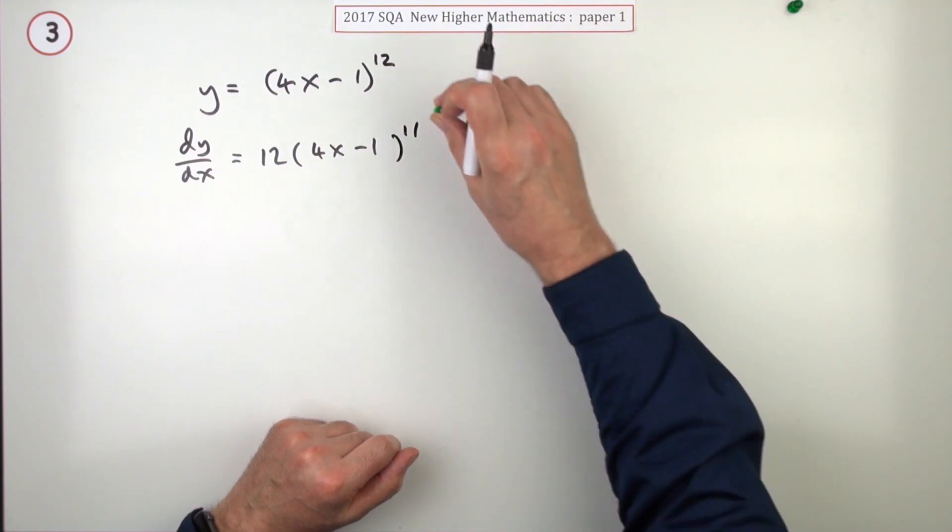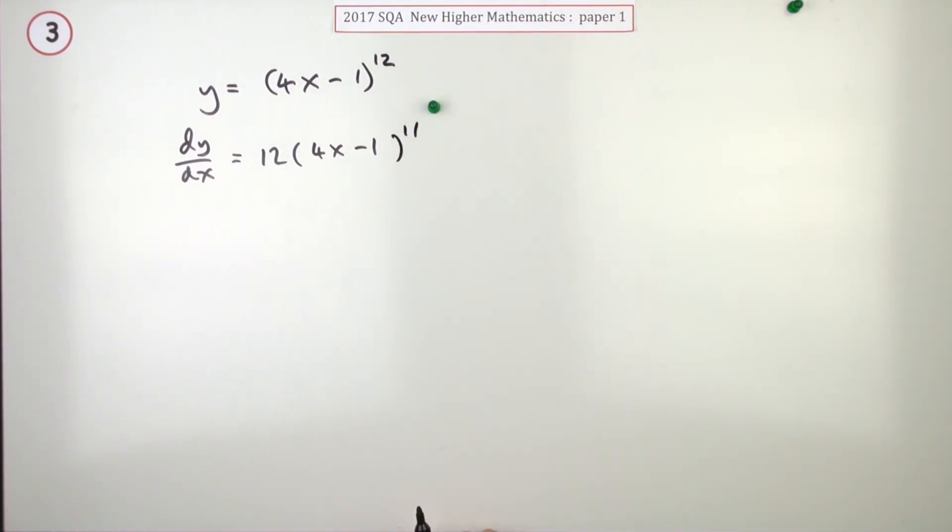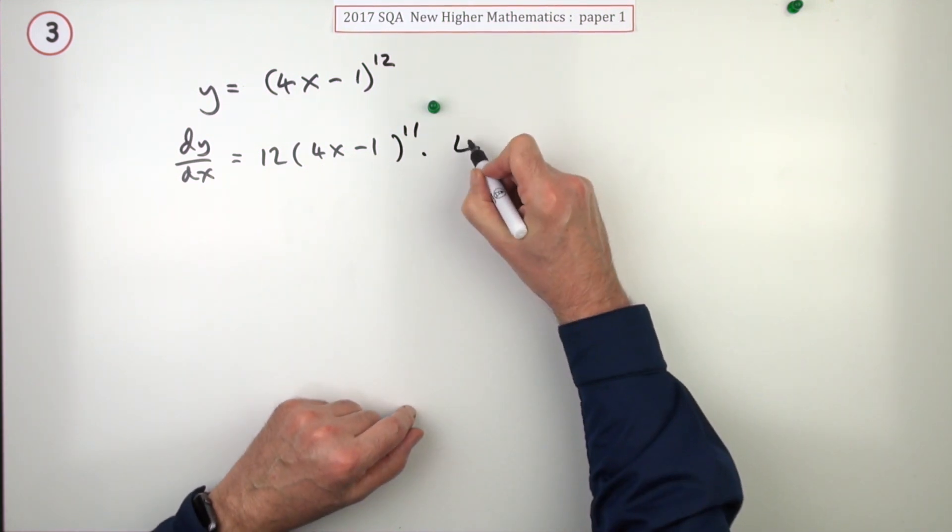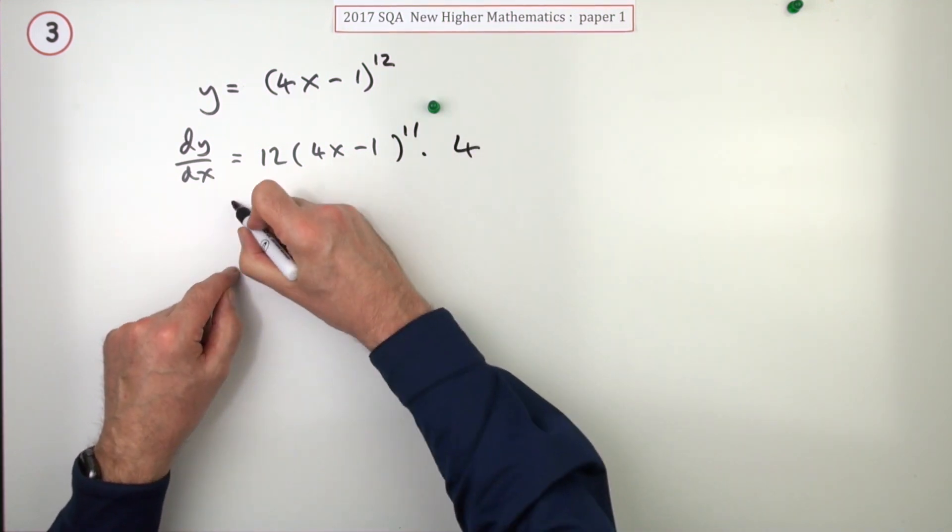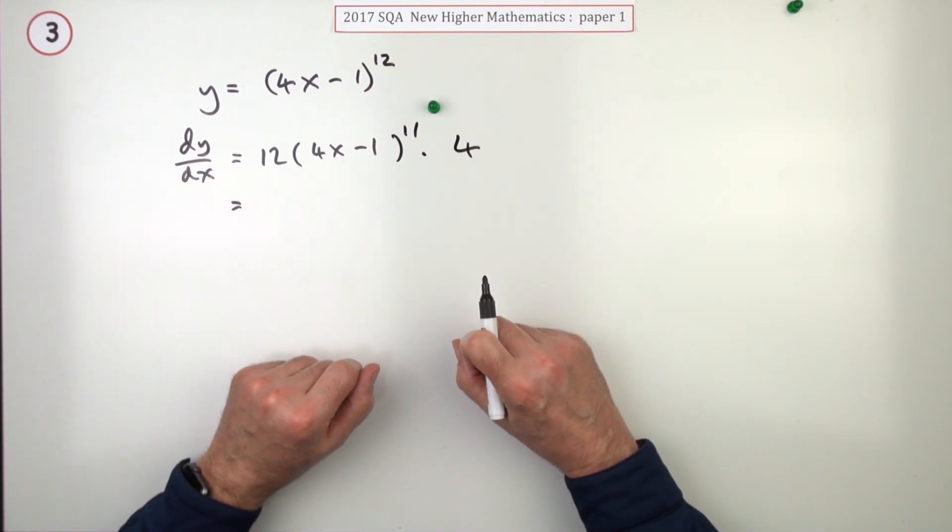You get the first mark. Now you multiply that by the derivative of the inner function, which is 4. Now normally you'd expect you'd carry on and then simplify that, the same way as in question 2.